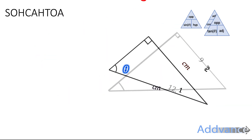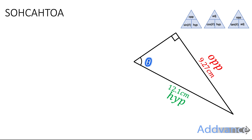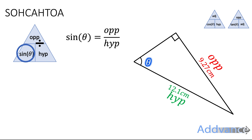Let's see another example. Here we are trying to find the angle. One side is 19.27 and the other side is 12.1. We'll label the sides opposite and hypotenuse. And here, which formula do we use? We're going to use sine — sine has opposite and hypotenuse in it. So sine of the angle is equal to opposite over hypotenuse.